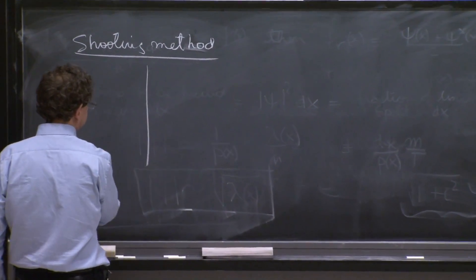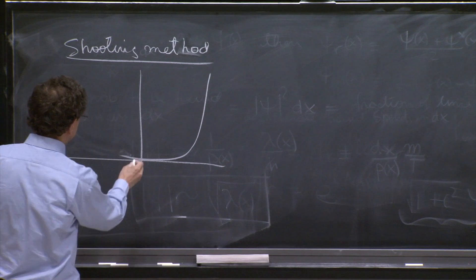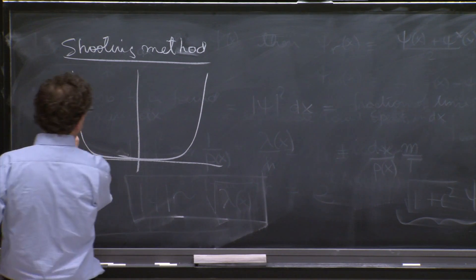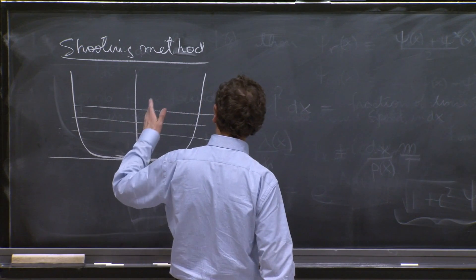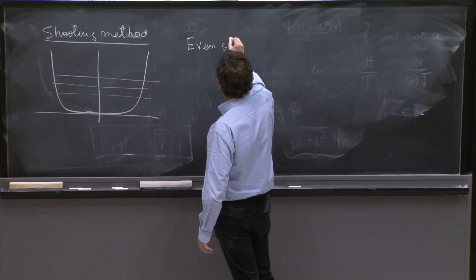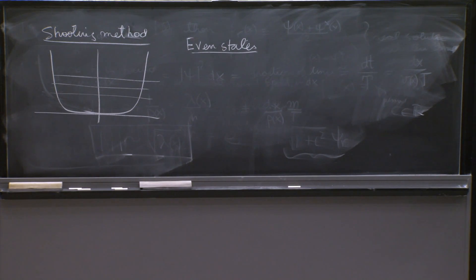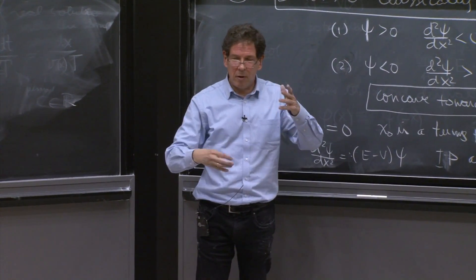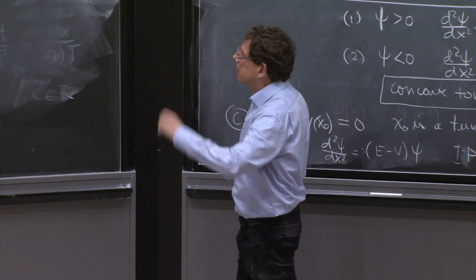The shooting method in differential equations is quite nice. Suppose you have a potential that is symmetric, maybe something like this. You want to find energy eigenstates. You do the following. You can look for even or odd states if the potential is symmetric. Sometimes the potential will have a wall, in which case you don't have to require a symmetric potential. But let's consider the case when the potential is symmetric, and you look for even states.